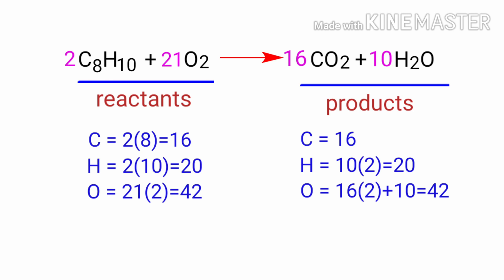The equation is now balanced. There are 16 carbon atoms, 20 hydrogen atoms and 42 oxygen atoms on both sides.